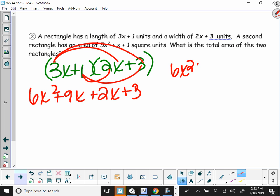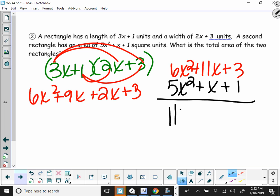And then added to that is going to be our 5x squared plus x plus 1 for our total area, which makes your answer 11x squared plus 12x plus 4.